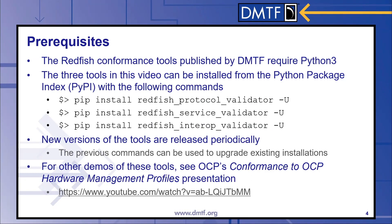The Redfish conformance tools published by DMTF all require Python 3. The three tools in this video can be installed from the Python package index with pip from the command line. You would use: pip install redfish-protocol-validator -U, pip install redfish-service-validator -U, and pip install redfish-interop-validator -U. New versions of these tools are released periodically to provide bug fixes and new features. The -U argument with pip will apply updates to installed packages, so you can reuse these commands to also update your tools.